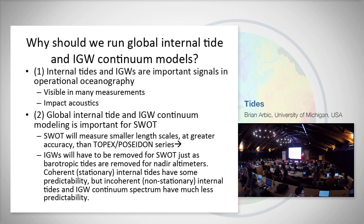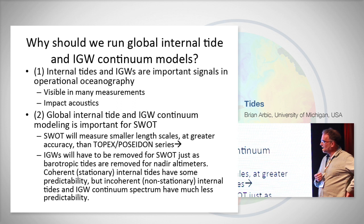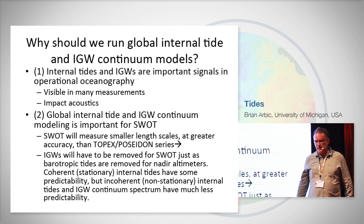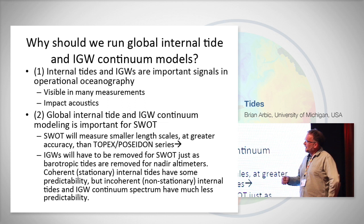Why should we care about global internal tide and internal gravity wave continuum models? First, internal tides and internal gravity waves are important signals in operational oceanography — visible in temperature variance measurements from moorings and many other measurements. They also impact acoustics, which is why the U.S. Navy cares about it: the speed of sound is a sensitive function of temperature and salinity, so internal gravity waves affect anti-submarine warfare.